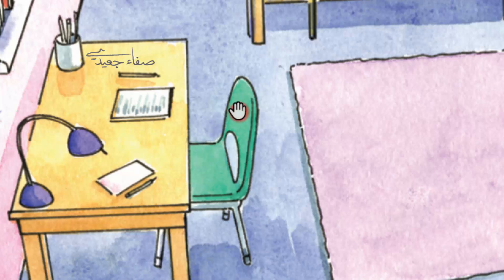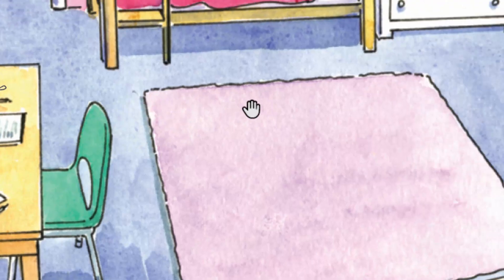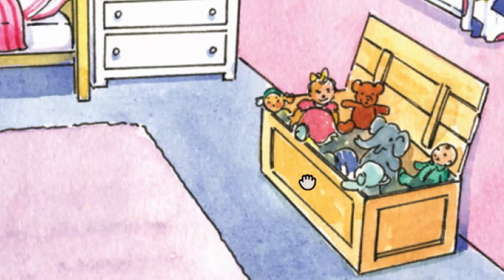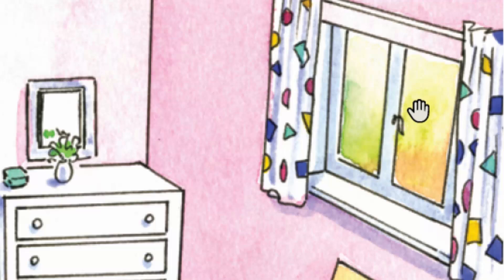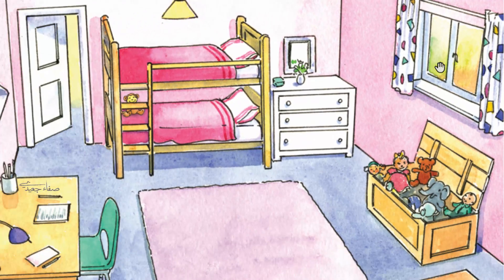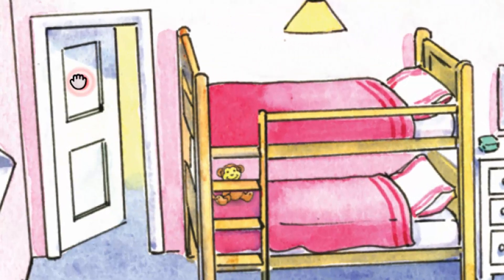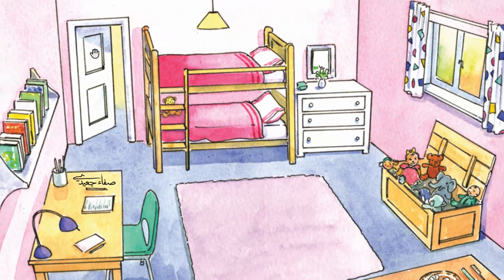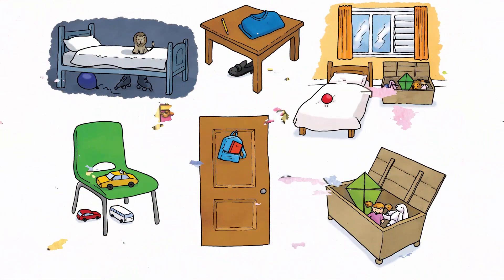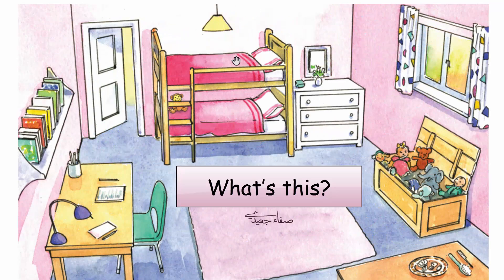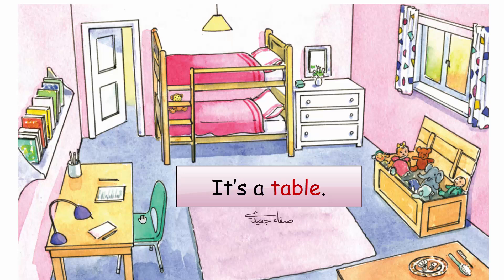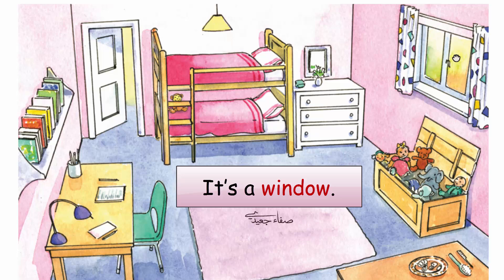It's a table. It's a chair. It's a box. It's a bed. It's a window. It's a door. What's this? It's a bed. It's a table. It's a chair. It's a box. It's a window. It's a door.